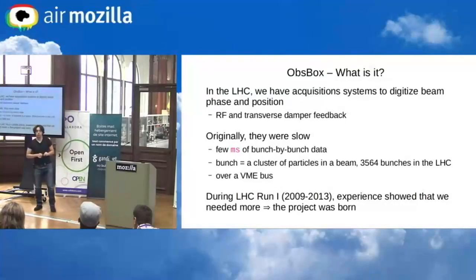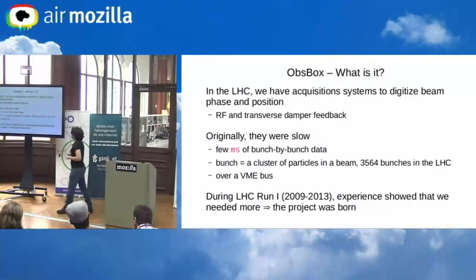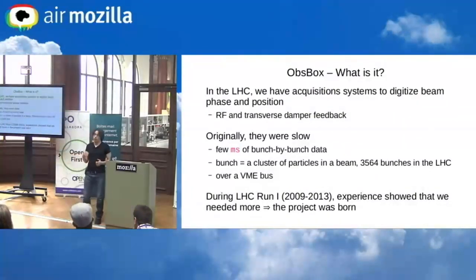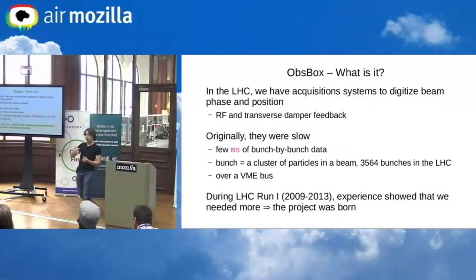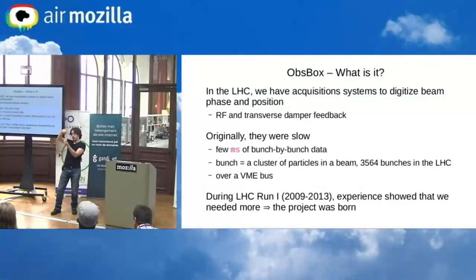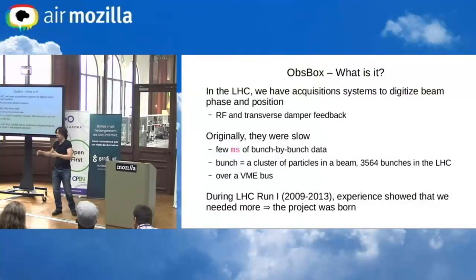Now the project I want to focus on: the OSBOX — the Observation Box. It's an example of how we use Linux and the kernel. We have beams in the accelerators that are highly non-linear, so you need feedback control loops to keep them stable. For example, if you want to move or stretch the beam, you have to change many parameters across the whole accelerator simultaneously.